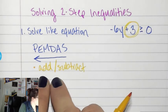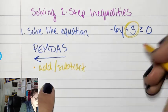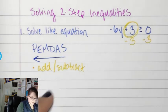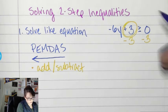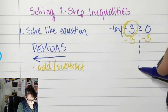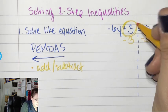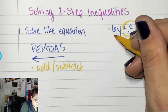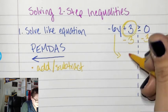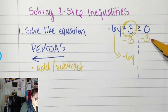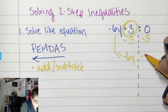What is the opposite of add? So I'm going to subtract 3 from both sides. And there's your break, right there. So this cancels. I've got negative 6y. And what's 0 minus 3?